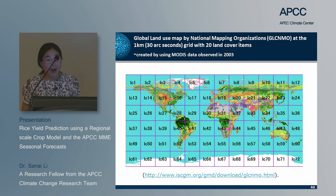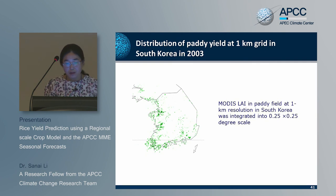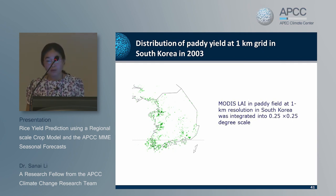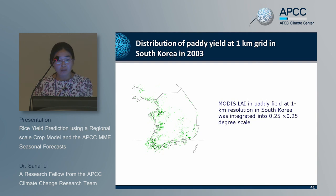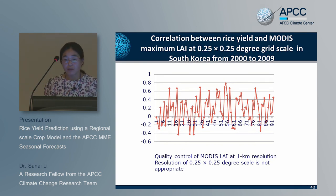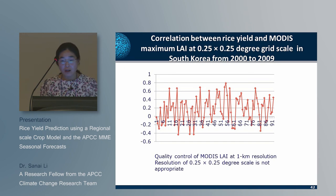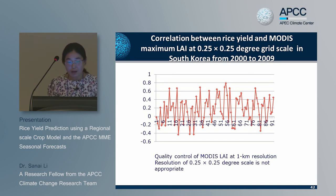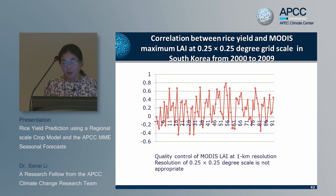The distribution of paddy fields at 1-km resolution in South Korea in 2003 was identified, and the MODIS area in paddy fields at 1-km resolution was aggregated to 0.25 by 0.25 degree scale. Spatial correlation between rice yield and MODIS maximum leaf area index at 0.5 by 0.5 degree scale in South Korea shows a weak correlation for most grid cells, indicating that quality control of MODIS LAI at 1-km resolution may be required, or the resolution of 0.5 by 0.5 degree may not be appropriate.